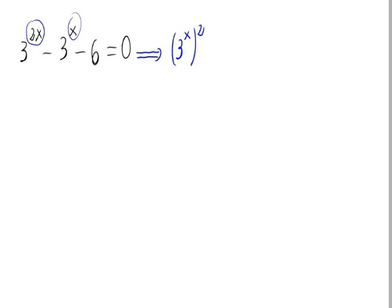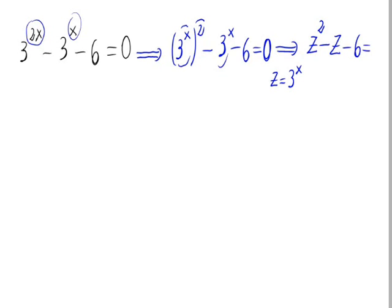So, as we can see, 3 raised to 2x is the same as 3 raised to 2x, everything squared, and minus 3 raised to 2x minus 6 equals 0. Now, as we can see, we have 3 raised to 2x on both powers, so let's make a change of variable, calling 3 raised to 2x equal to z. That gives us z squared minus z minus 6 equals 0.